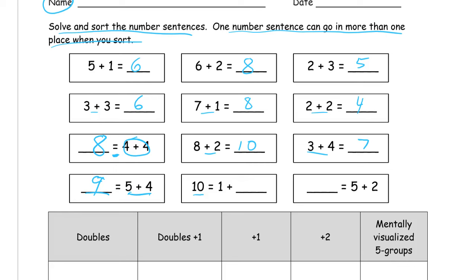And here we have 10 equals, this is a plus 1 in disguise, really. But when they gave us the total, then we have to figure out, what could we have? If we add 1 to 9, then it's 10. And then here we need a total for 5 plus 2, and that's a plus 2. Plus 1 would be 6, so plus 2 is 7. Okay, now we solved them all, and now we're going to sort them.